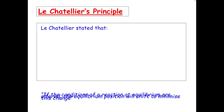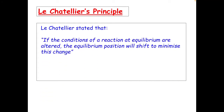Le Chatelier stated that if the conditions of a reaction at equilibrium are altered, the equilibrium position will shift to minimise this change. What that means is that if you do something to a system that is at equilibrium — so it's settled down — the reaction rate for the forward and reverse reactions are the same, and the concentration of the products and reactants are constant.